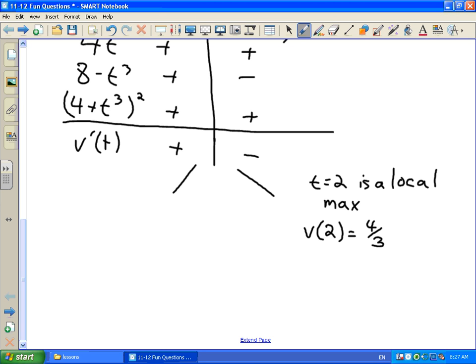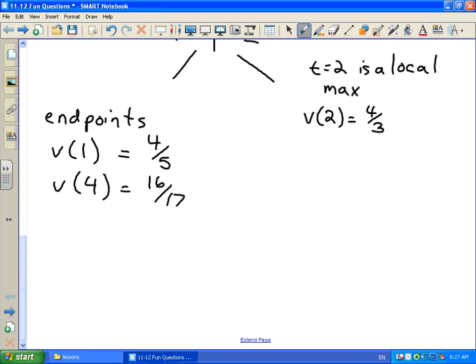Now because we have a restricted domain, we should also check our endpoints as well. What are our endpoints of our domain? Well, they are t = 1 and t = 4. So we sub 1 and 4 into our velocity function and we find 4/5 at v = 1 and 16/17 at v = 4.